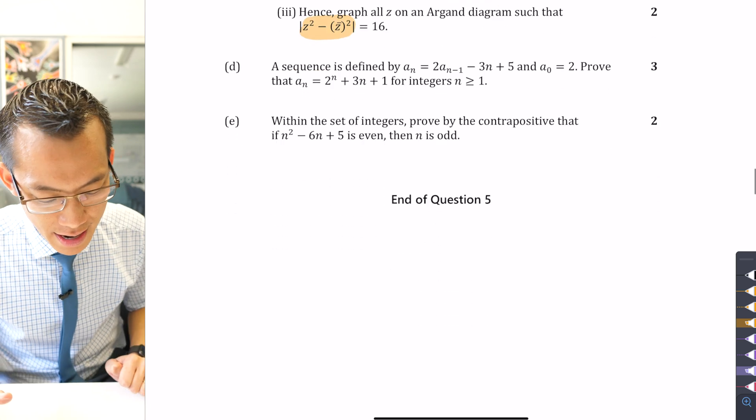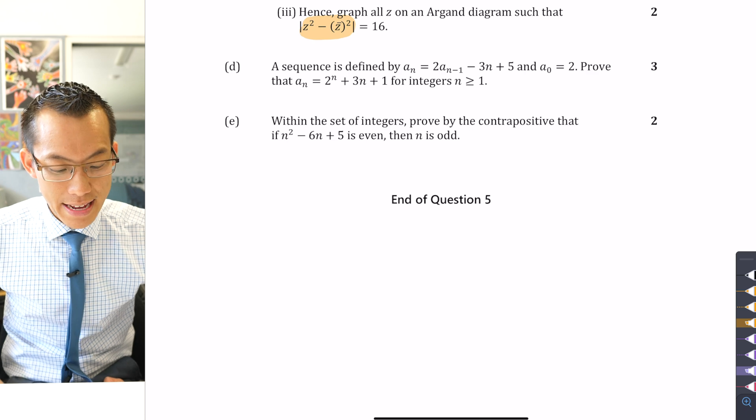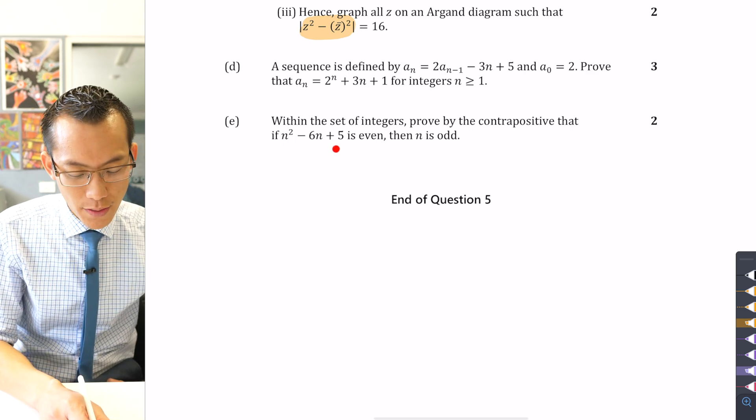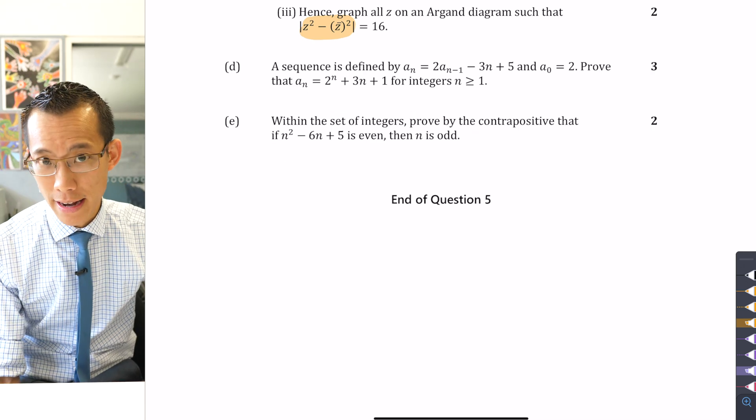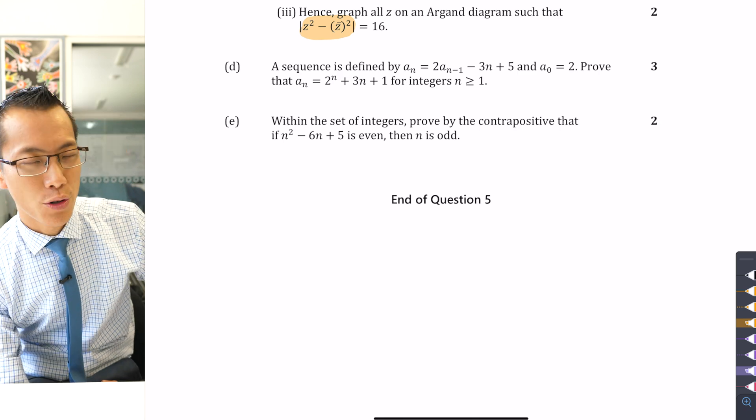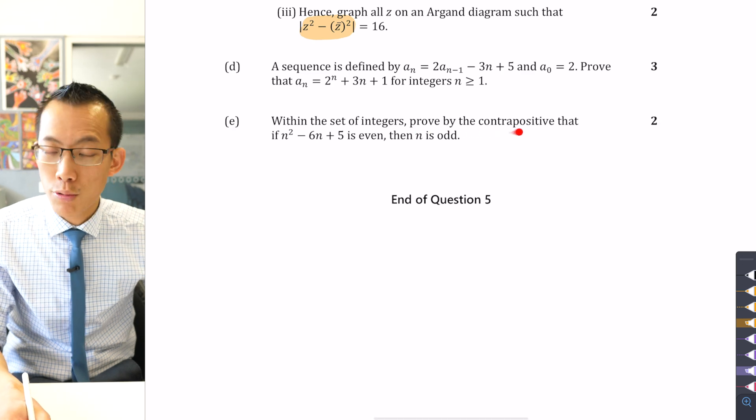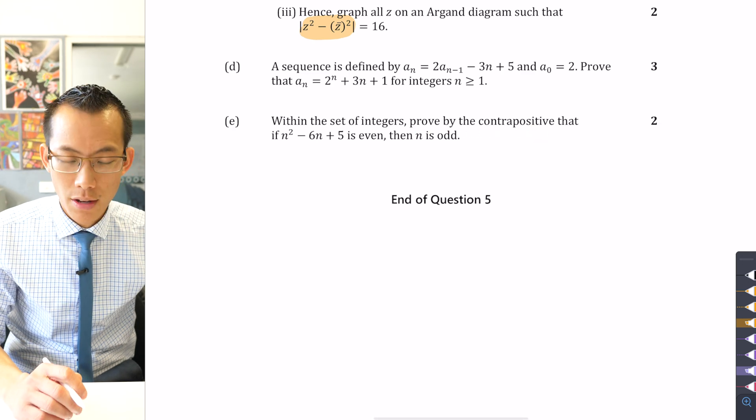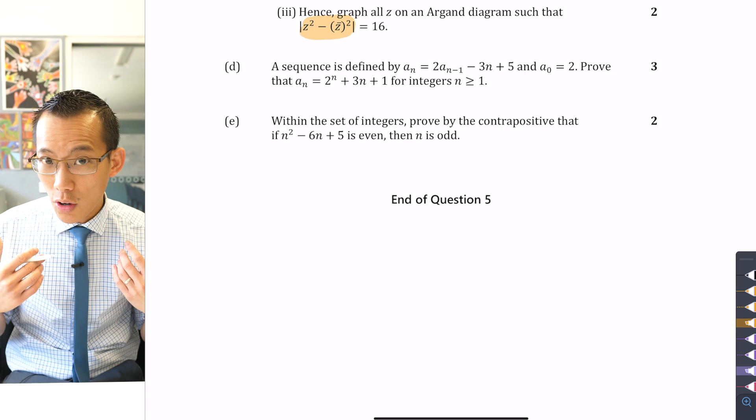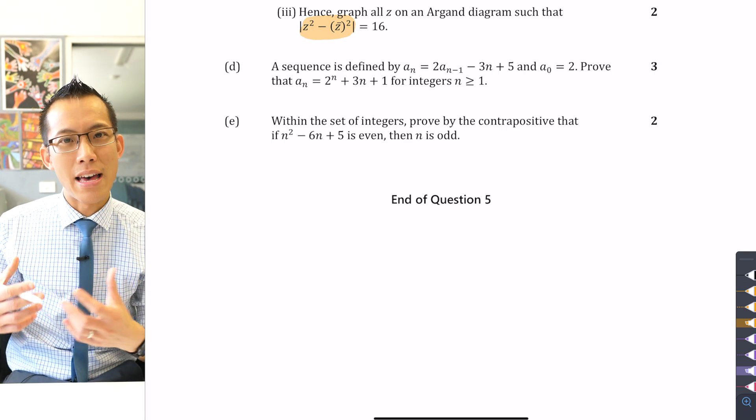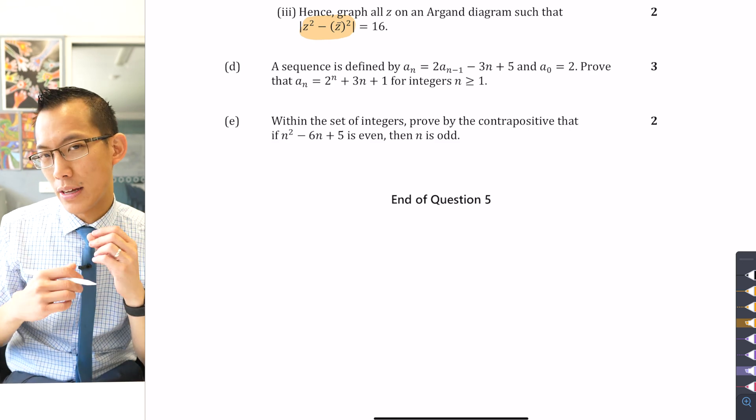Alright, final question in number 5: within the set of integers, prove by the contrapositive that if n² - 6n + 5 is even, then n is odd. So this is a classic number theory or discrete mathematics question to do with number parity, evenness and oddness. You even get given the specific method that's prescribed: prove by the contrapositive. So how does this work? Well, the first thing you need to know is what is the contrapositive of this particular statement. Once you've got that, what you want to do is prove it, and then once you've proven the contrapositive, that is logically equivalent to proving the original statement.